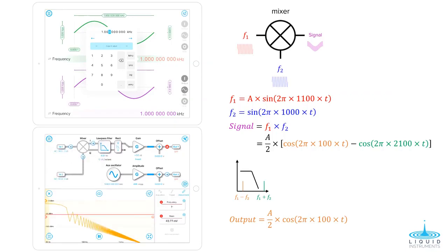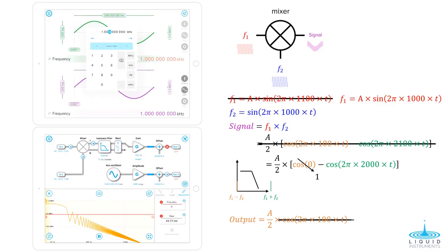Let's check this with the math. Replace F1 with a 1kHz signal. Now, instead of 100Hz, we get a zero frequency, or DC component, and a high frequency component at twice the input frequency. If we filter out the high frequency, we obtain a DC signal with its amplitude proportional to the original signal.